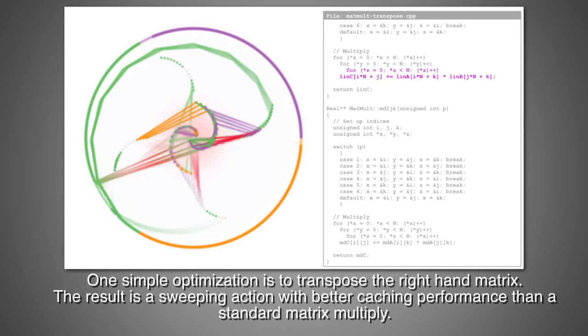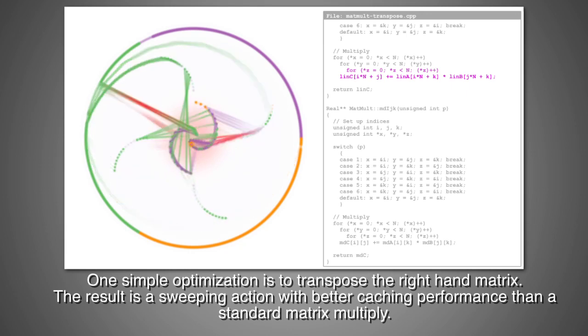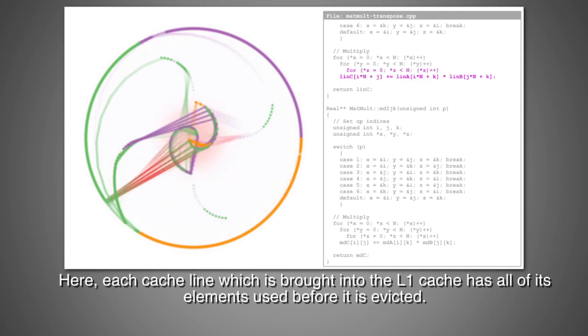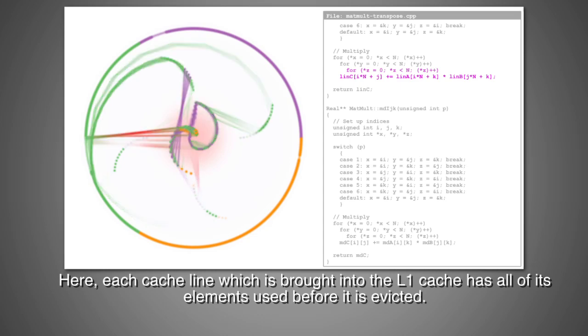One simple optimization is to transpose the right-hand matrix. The result is a sweeping action with better caching performance than a standard matrix multiply. Here, each cache line which is brought into the L1 cache has all of its elements used before it is evicted.